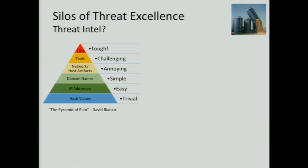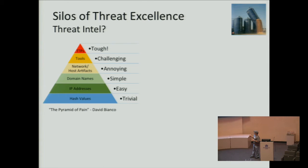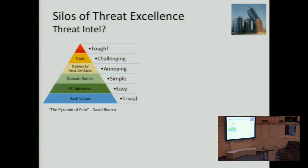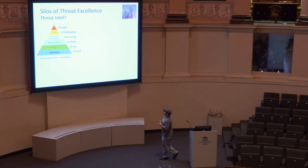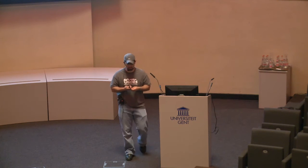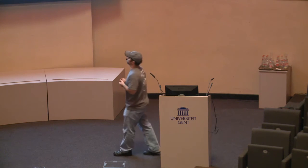Is everyone familiar with the Pyramid of Pain by David Bianco? He basically said these are all your different indicator types — hash values, IP domain names, network and host artifacts. Those are fairly easy to get, but are they high value or medium value? What I really came to the conclusion of is that what threat intel vendors are selling isn't threat intel — it's threat data.